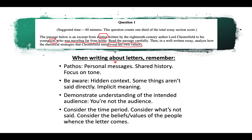Here are some things to remember when writing about letters. Number one: pathos is very important. These are personal messages between people across time who have a shared history. You should focus on tone because it will be very important. This tone will not always be explicit because there's hidden context — some things aren't said directly. There's a lot of implicit meaning and conversations prior to and after the letter that we will not be privy to. It's like a snippet in a conversation.